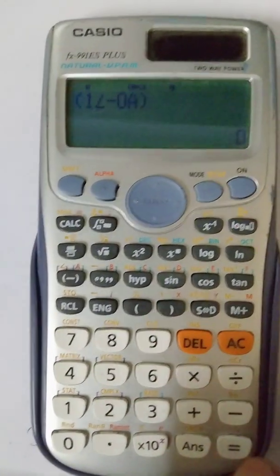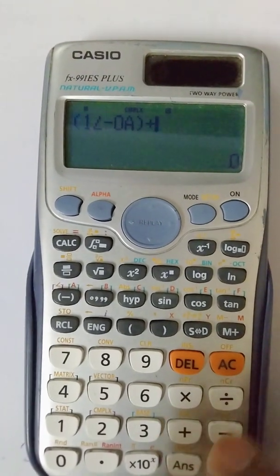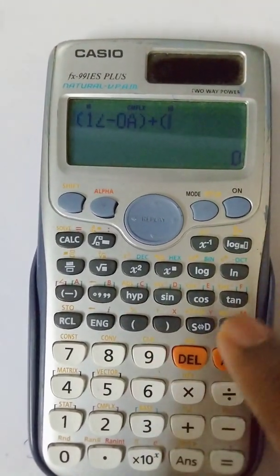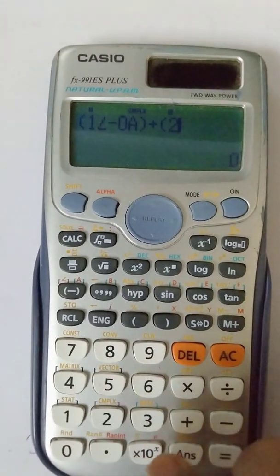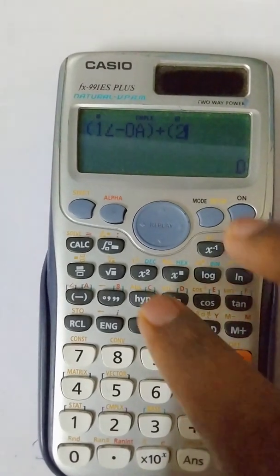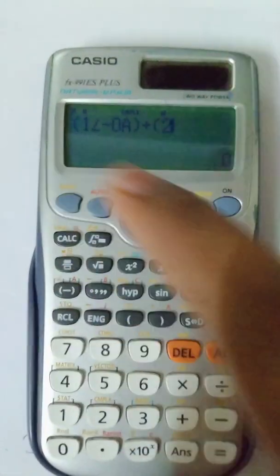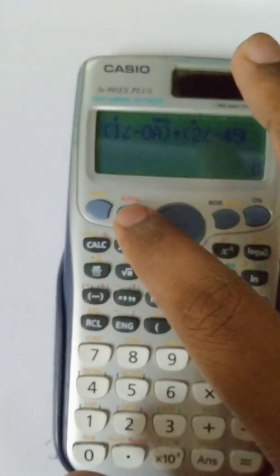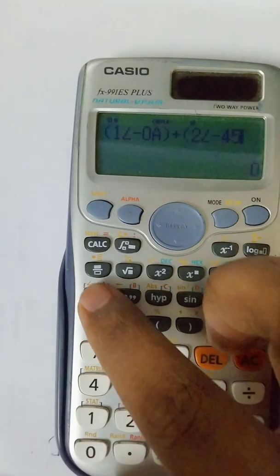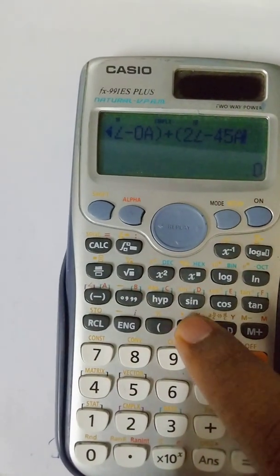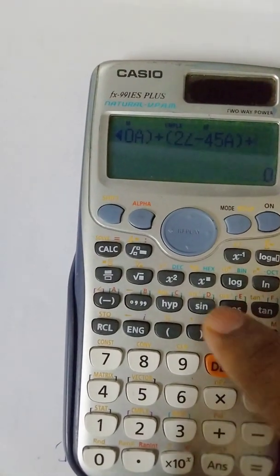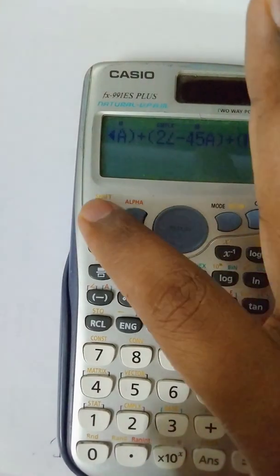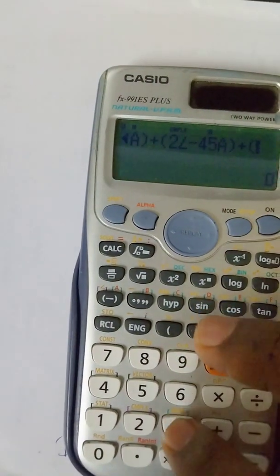And then close the braces, plus, and now enter the second point which is 2. Therefore, once again clicking on shift, angle minus 45 alpha A, plus. And the third point, the third point is 3, therefore enter 3, shift, angle minus 90 alpha A, plus.